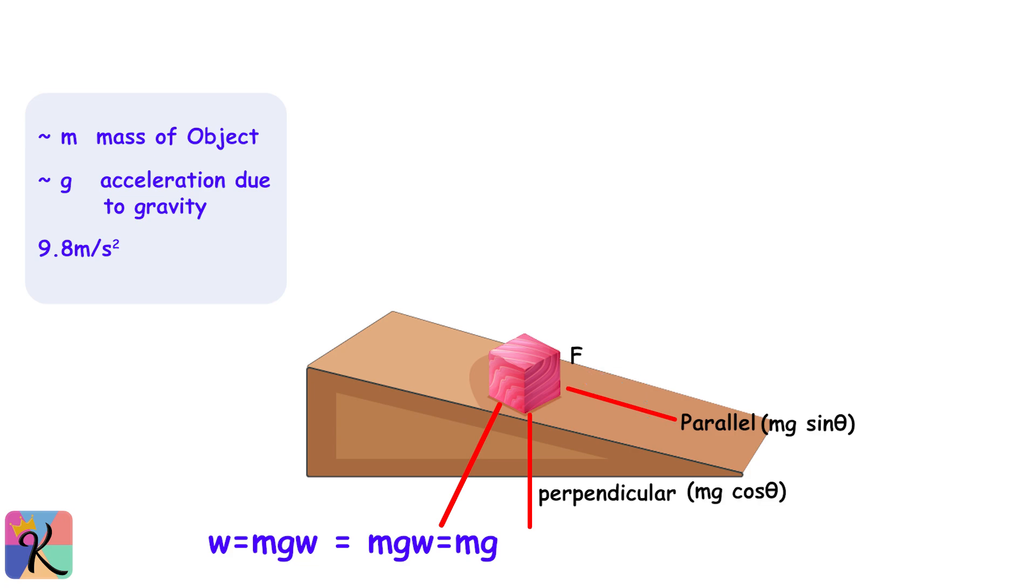The perpendicular component is Mg cosine theta, representing the force pressing the block against the ramp's surface. It's like the block is saying, hey, I'm going to lean on you as I try to slide down. The perpendicular force is essential because it helps determine how much friction acts on the block. Always remember: Mg sin theta acts down the ramp, and Mg cosine theta acts against the ramp.